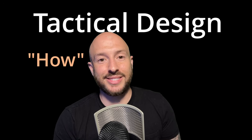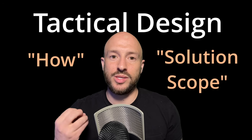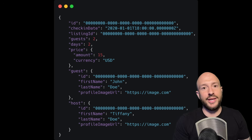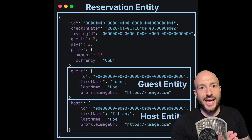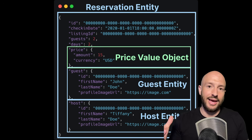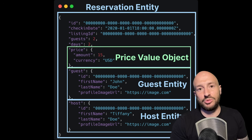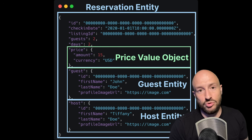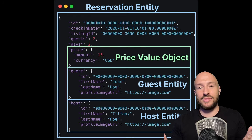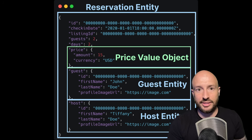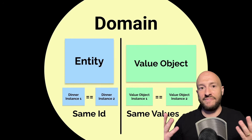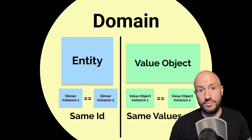After strategic design comes tactical design — this is where we zoom in on implementation details. In a DDD codebase, each domain object is either an entity or a value object. An entity has an ID and is mutable, while a value object doesn't have an ID and is immutable. Two entities are considered equal if they have the same ID, even if the values are completely different. Two value objects are considered the same if the values of their properties are equal.